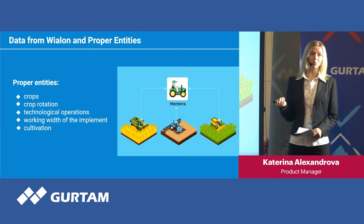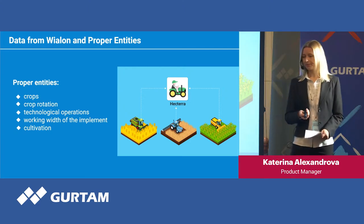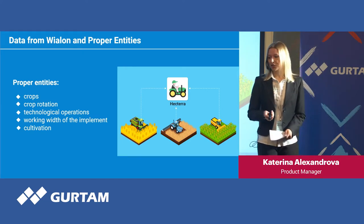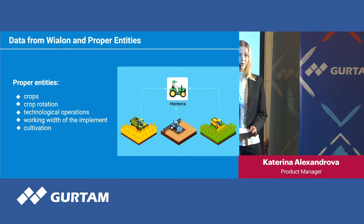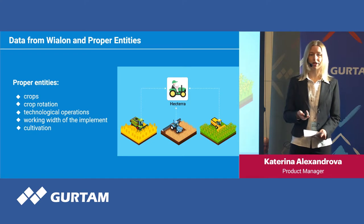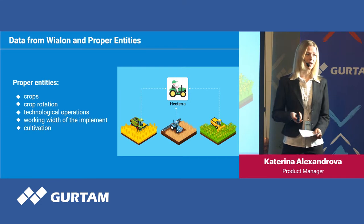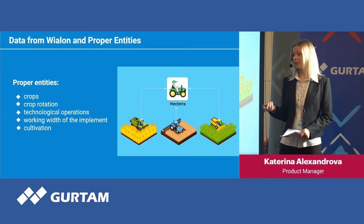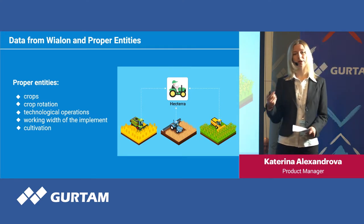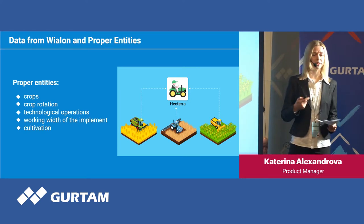The specific entities of Hectera are crops or plants growing on the field, crop rotation information, technological operations, the working width of the implement — which influences calculations of areas significantly — and cultivation itself, with all mechanisms to detect cultivations, calculate their parameters, and store the results in the database.